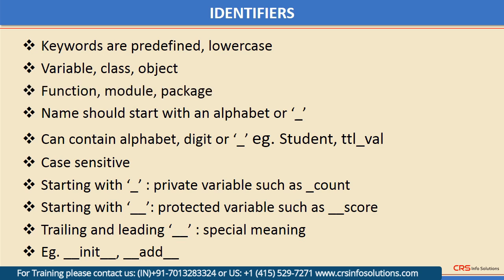How do you coin a name for any user-defined identifier? The first rule is that it should start with an alphabet or an underscore. The rest of the characters can be an alphabet, digit, or an underscore. An alphabet's case is not exchangeable — identifiers are case sensitive. 'Age' with capital A is not the same as 'age' with small a.